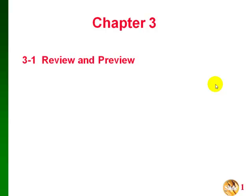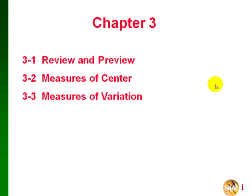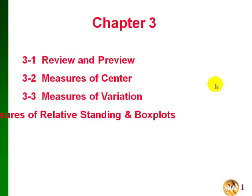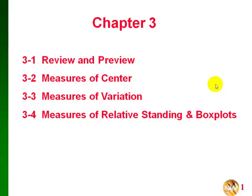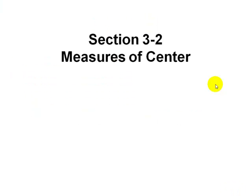This is the video for STAT 2070 Chapter 3. The sections we're going to go over are 3.2 about measures of center, 3.3 about measures of variation, and 3.4 about measures of relative standing and box plots. First, Section 3.2 about measures of center.